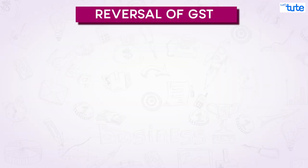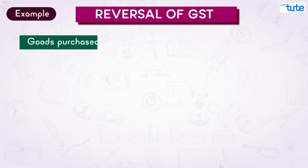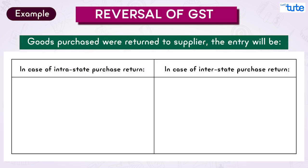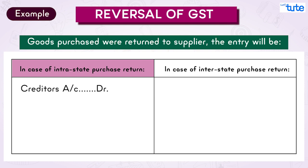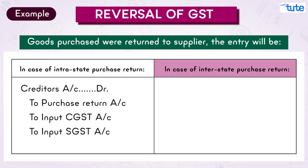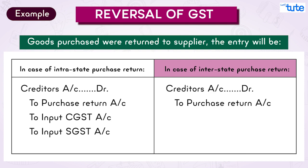In a reversal entry, input GST will be credited and output GST will be debited. For goods purchased returned to the supplier: in the case of intrastate purchase return, the entry is Creditors Account debit; To Purchase Return Account; To Input CGST Account; To Input SGST Account. But if it is an interstate purchase return, the entry is Creditors Account debit; To Purchase Return Account; To Input IGST Account.